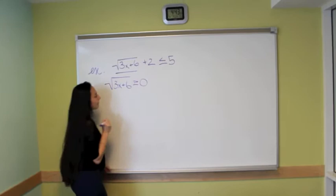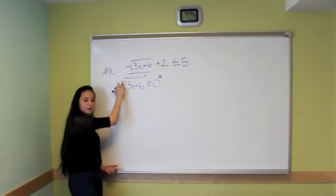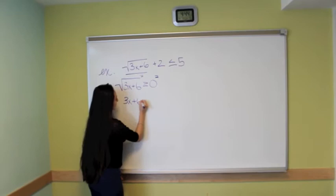So to solve this, to get rid of the radical, we're going to raise both sides to 2 because it's a square root sign. And since there's nothing here, we assume that it is 2. So that would give us 3x plus 6 is greater than or equal to 0.